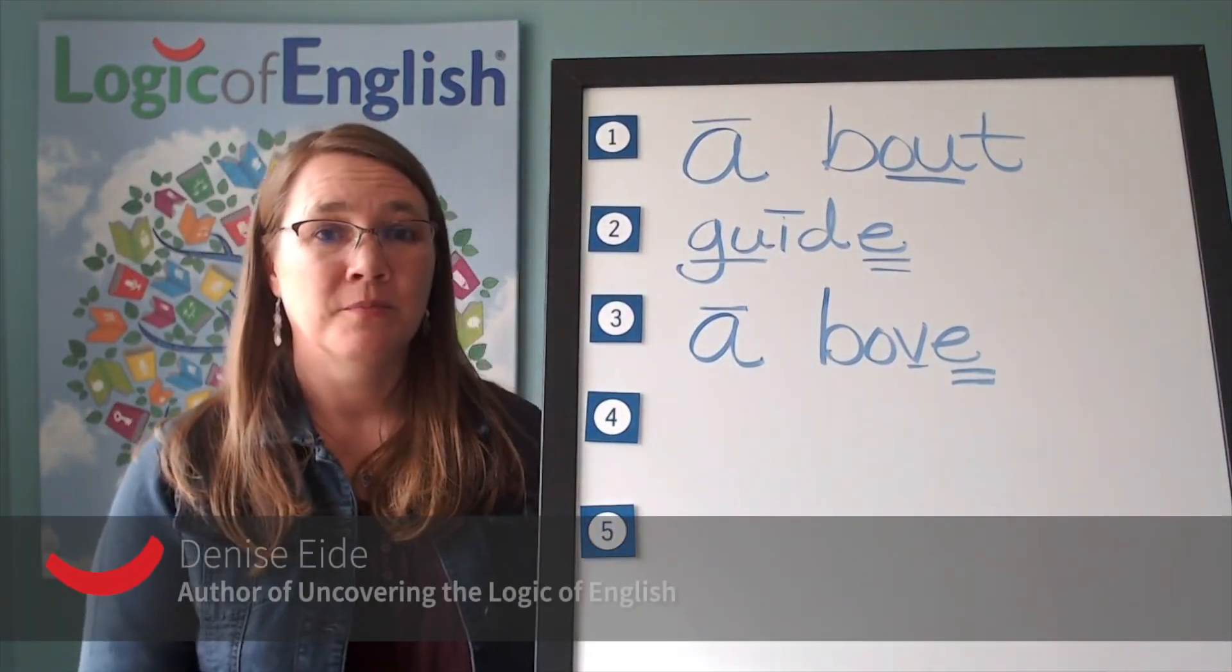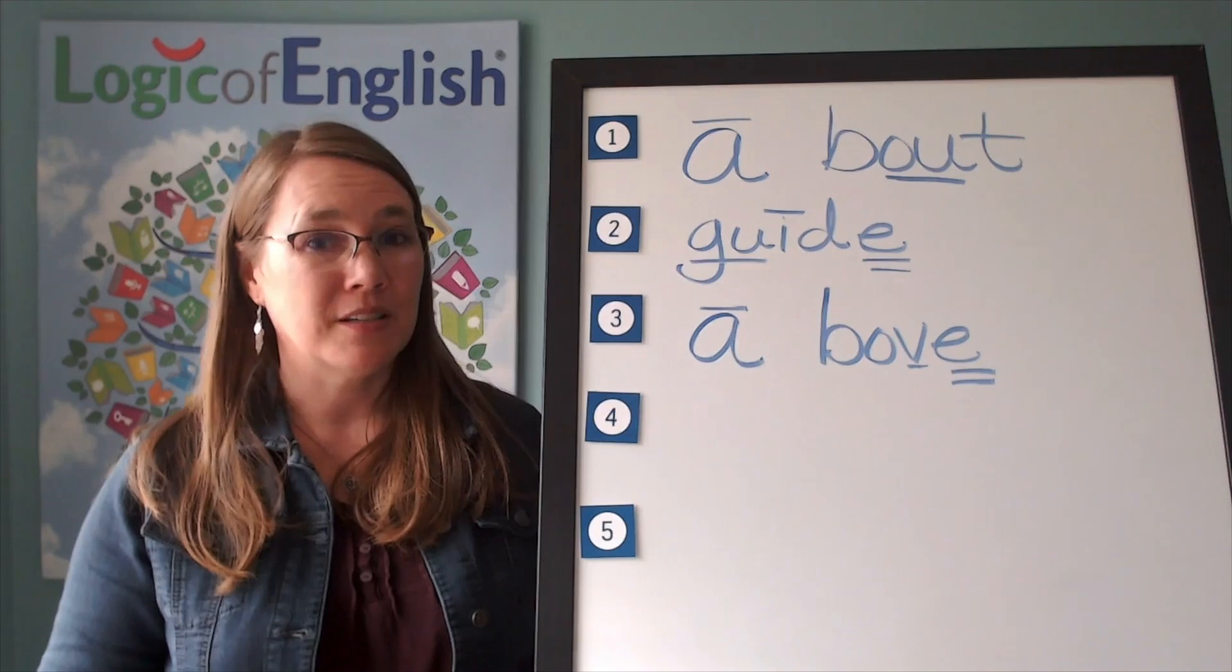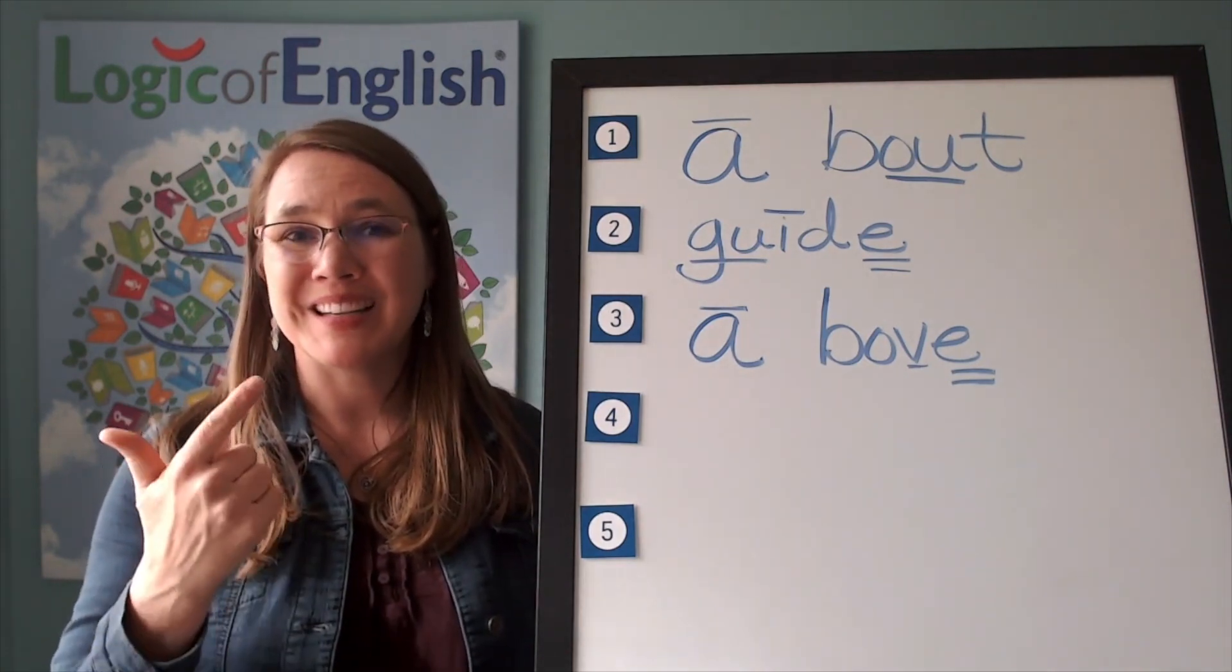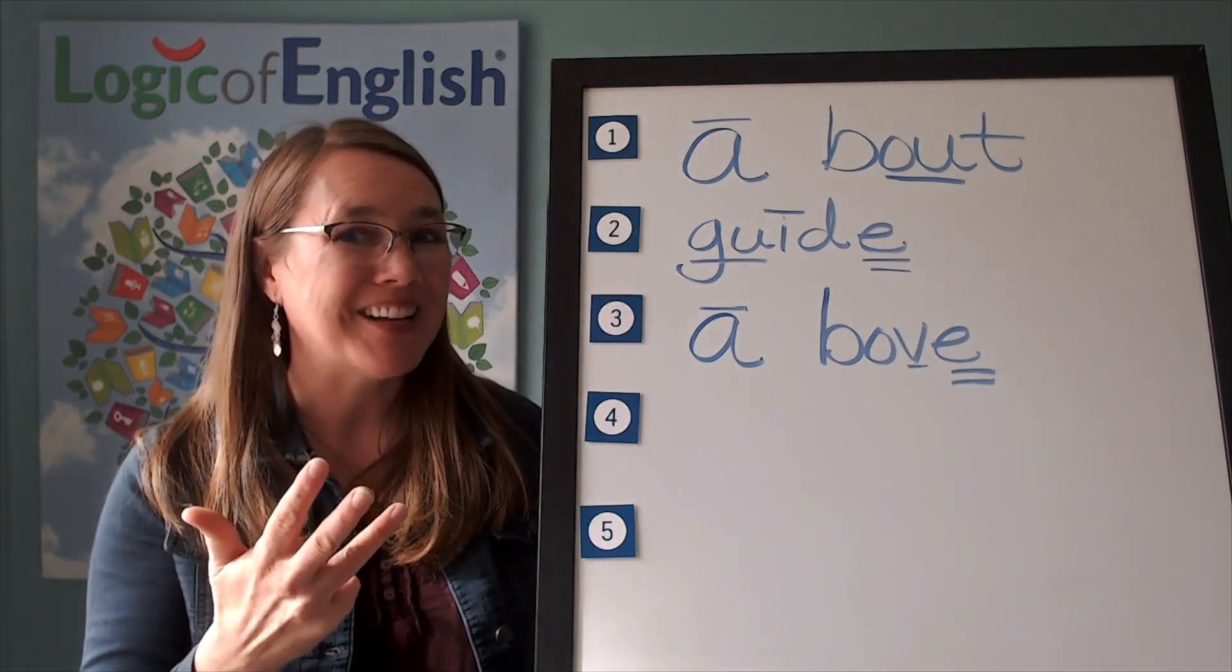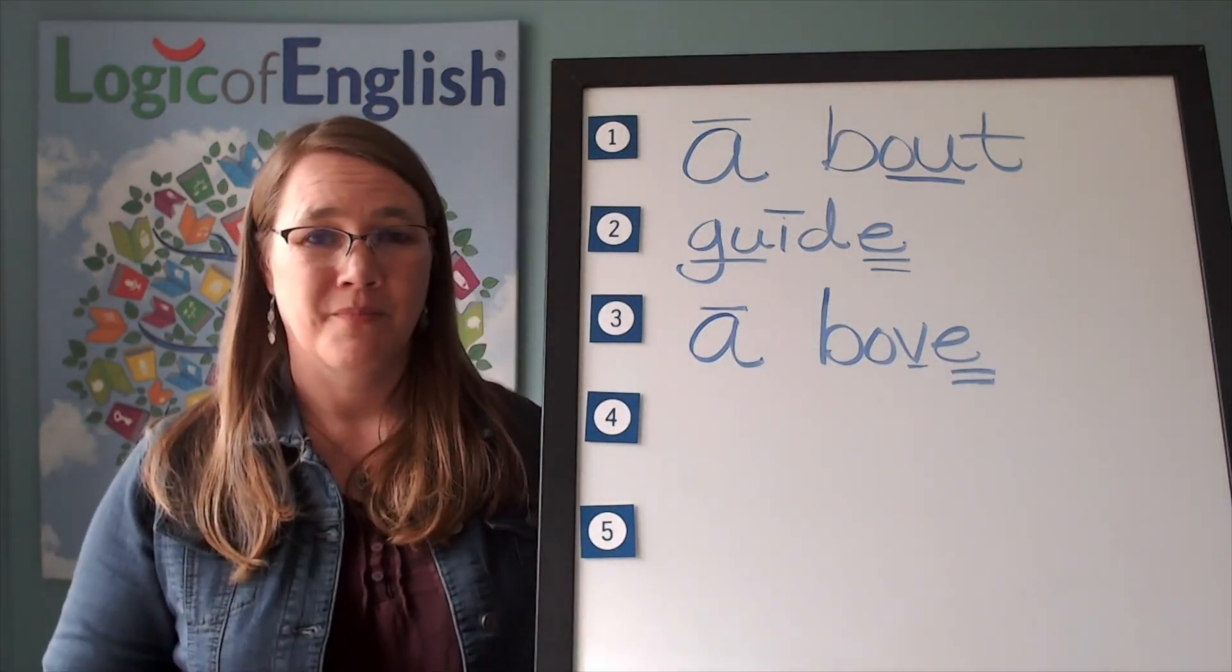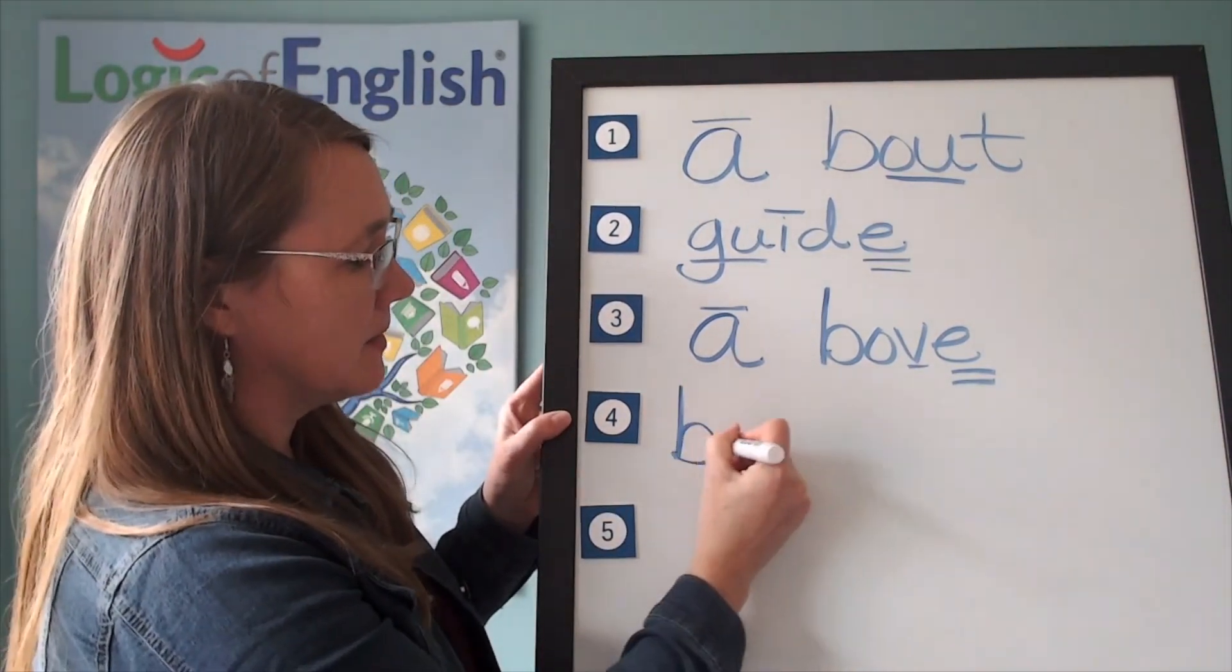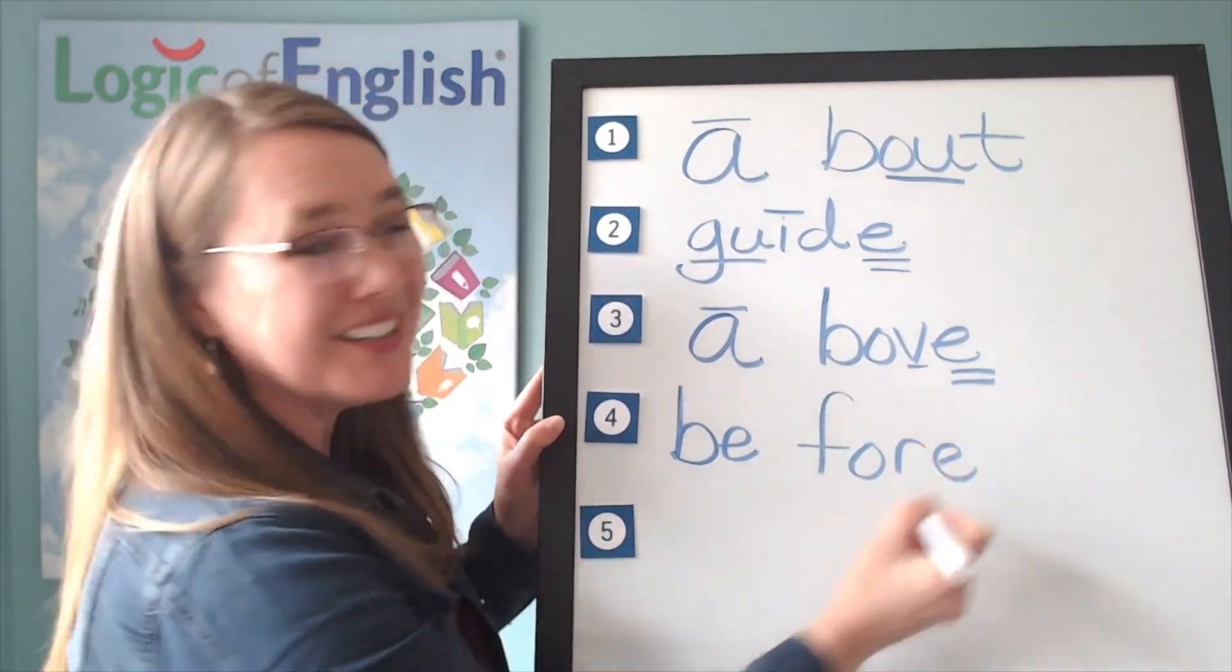The next word is before. Before you go to bed, be sure to brush your teeth. Before. How many syllables in before? Two. Very good. Let's sound it out. The first syllable is B. B, E. The second syllable is four. F, O, R. Silent final E.